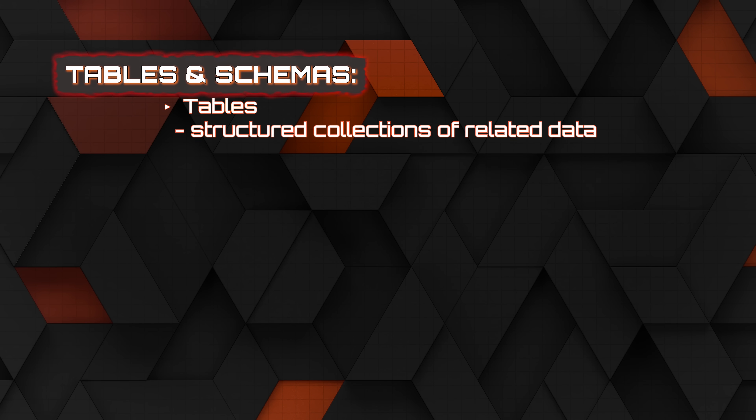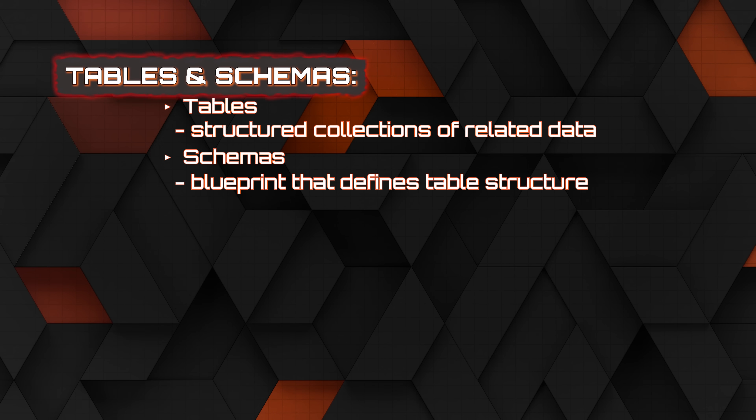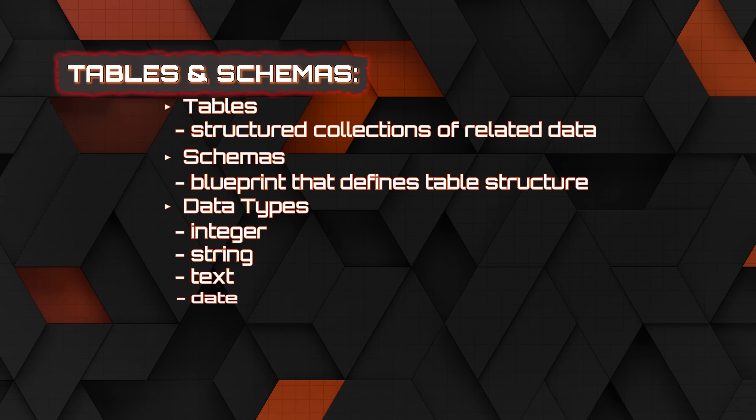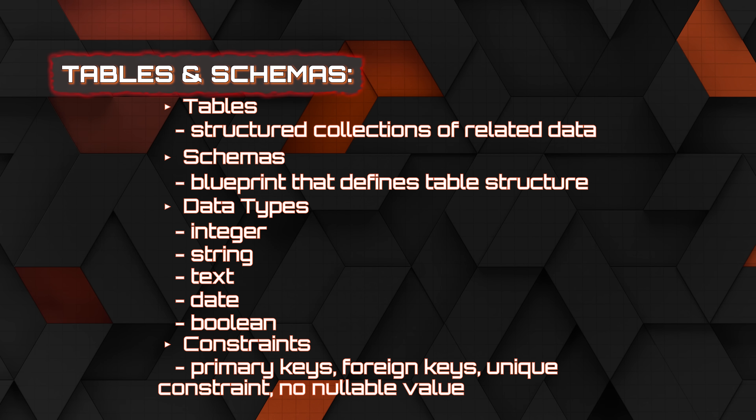Once you have some understanding of SQL syntax, start looking at tables and schemas. A table is a structured collection of data, and a schema is a blueprint that defines the table structure. This involves data types like integer, string, text, date, and Boolean. After that, look at constraints: primary keys, foreign keys, the unique constraint, and things like not allowing nullable values — this is where you make your schemas more strict.